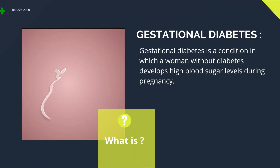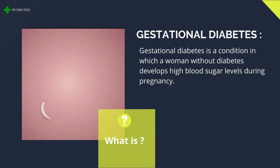What is gestational diabetes? Gestational diabetes is a condition in which a woman without diabetes develops high blood sugar levels during pregnancy.